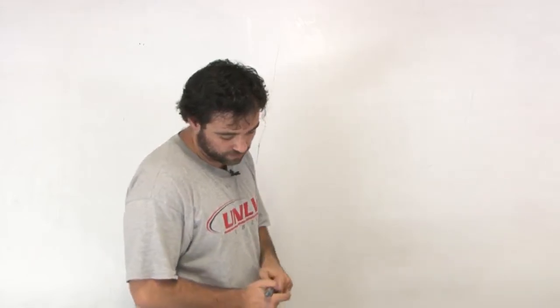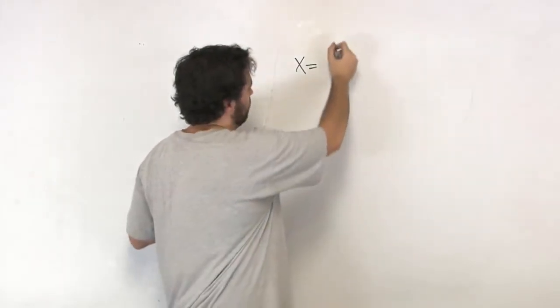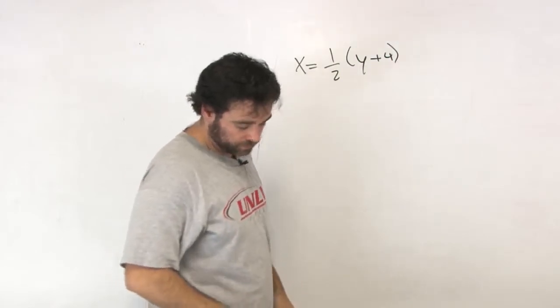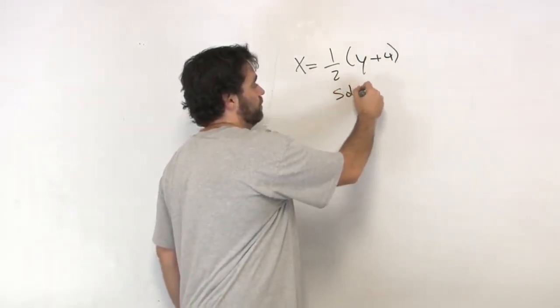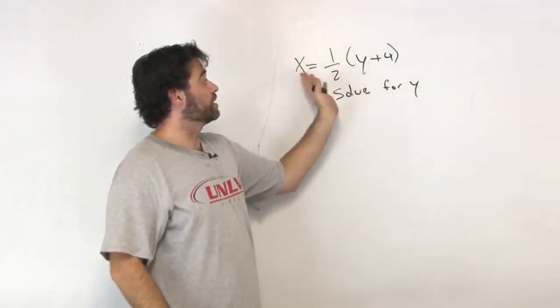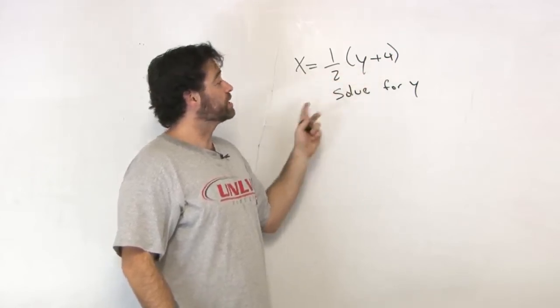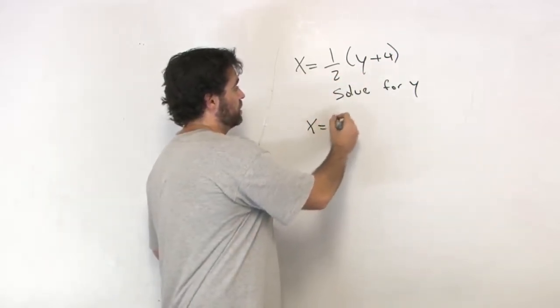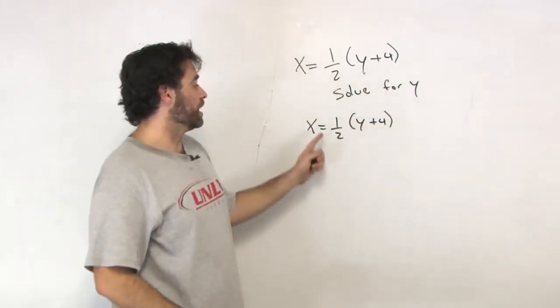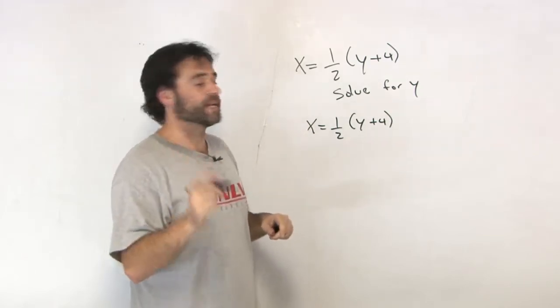Say I have x equals one-half of y plus 4, and we want to solve for y. Literal equation. We've got two variables. We're not going to get one answer. We're going to get one in terms of the other. We want to solve for y. I want to get rid of that half. How do I get rid of that half? I multiply everything by 2. The LCD is 2. So I multiply this by 2 and this by 2.